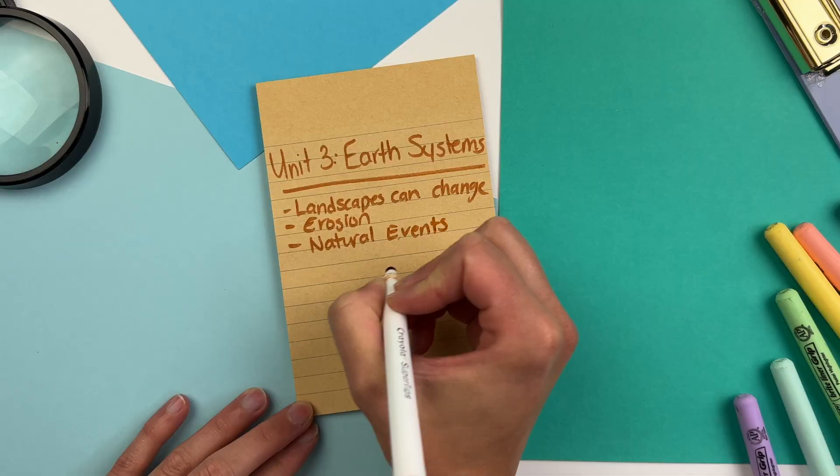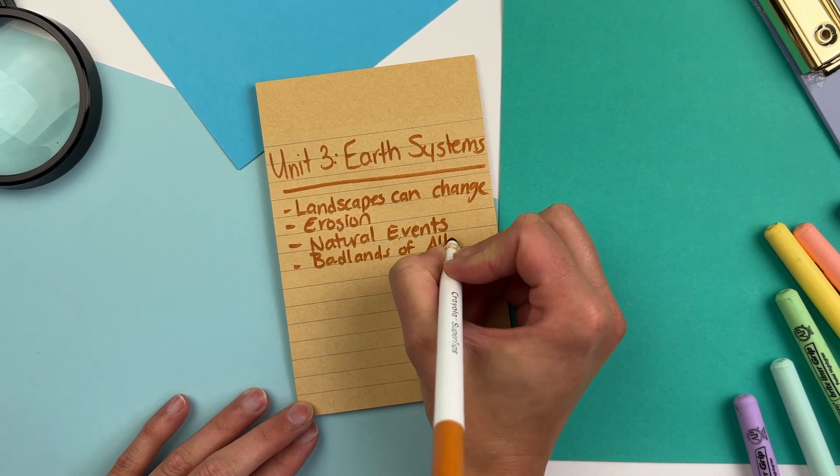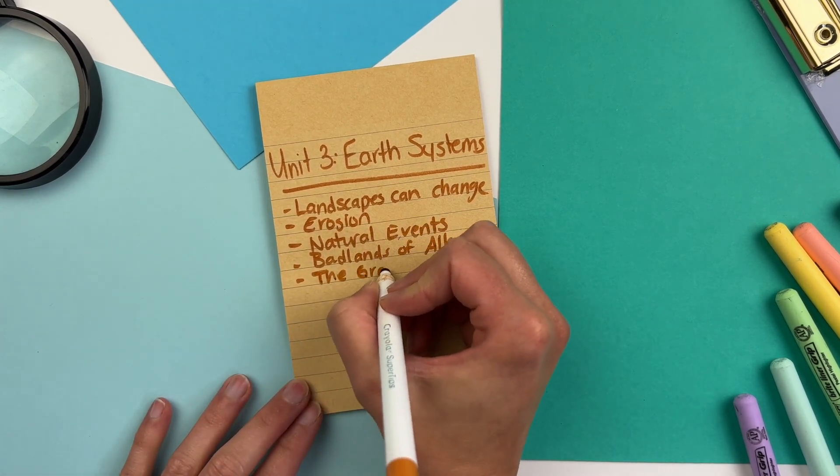The next parts touch on the water cycle again — you've already taught it in unit one, but you can't discuss earth systems without it. We talk about how water shapes landscapes and how water interacting with wind causes erosion, changing the way Earth looks. Examples include Alberta's Badlands and the Grand Canyon, which make for a fun virtual field trip or even an actual field trip if you're near the Badlands.